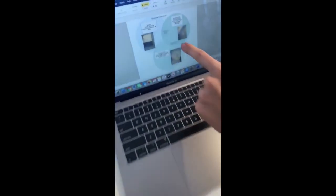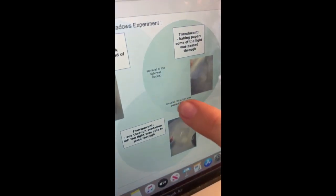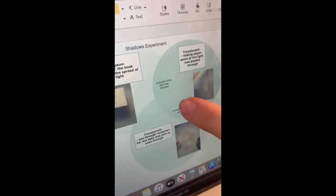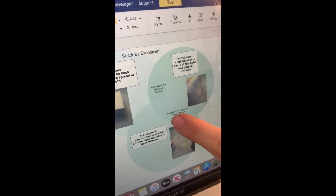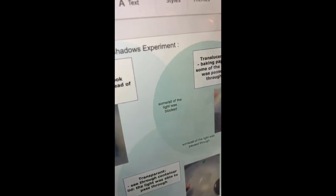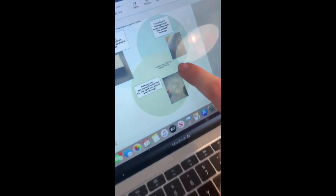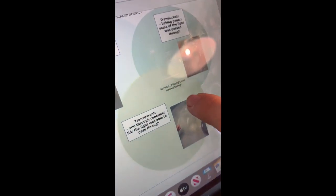To extend students' critical thinking, students are encouraged to describe the similarities between opaque, translucent and transparent objects. In this example, the student has written that opaque and translucent objects either allow for some or all of the light to be blocked. Students may also record that translucent and transparent objects allow for some or all of the light to pass through.